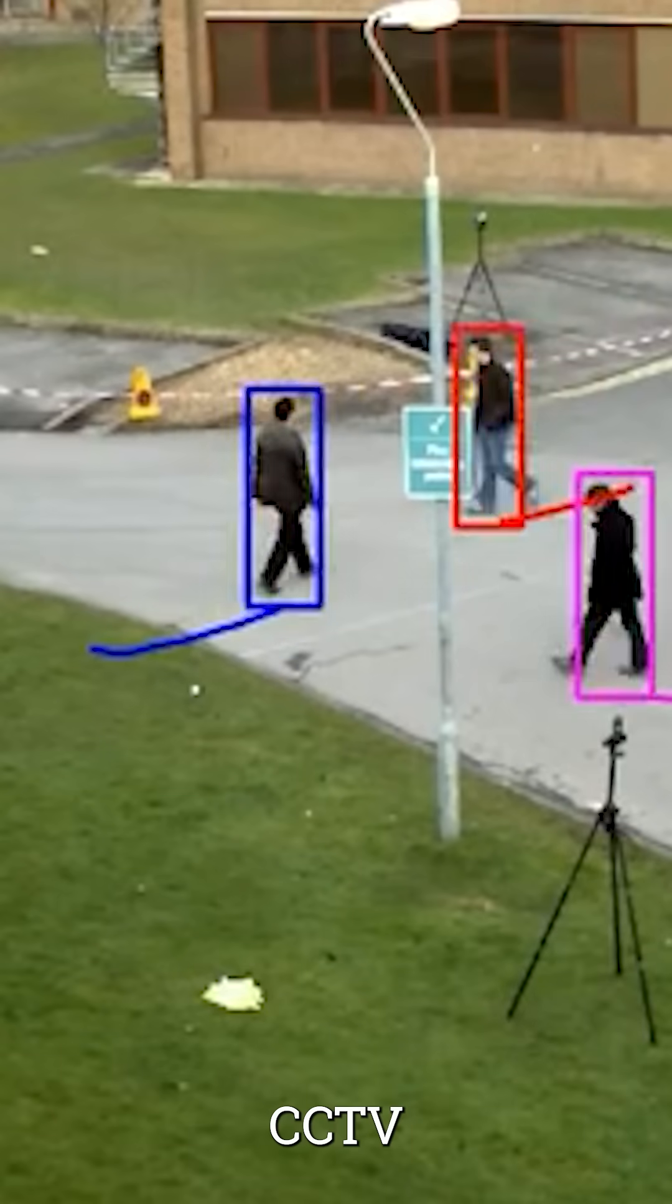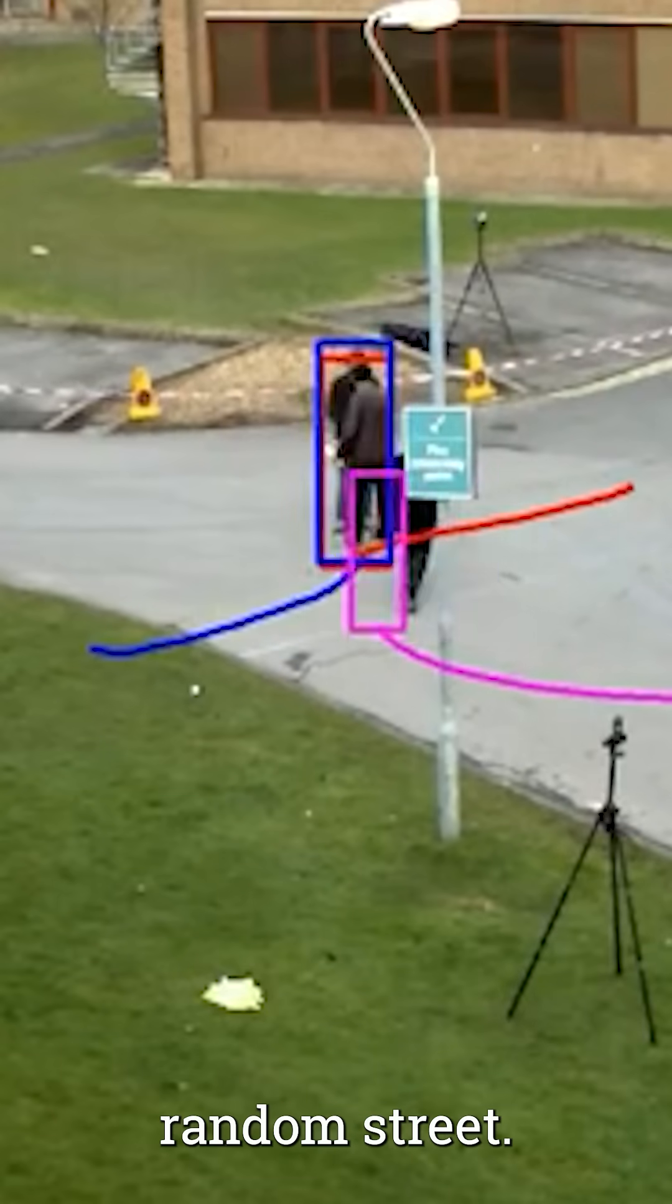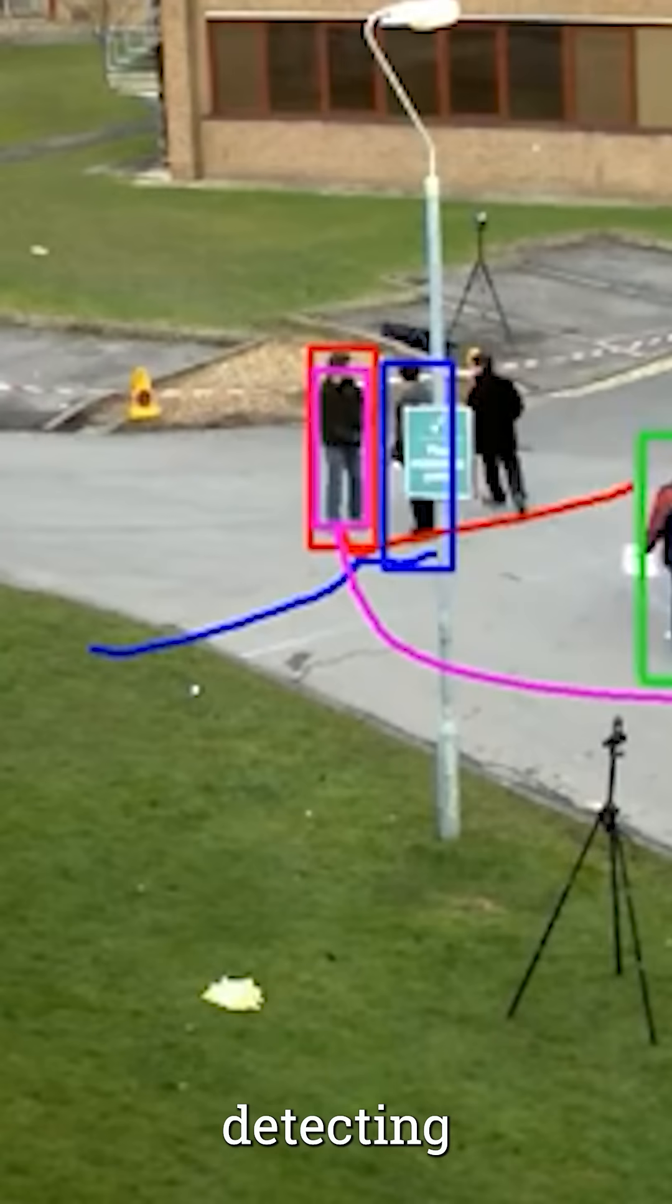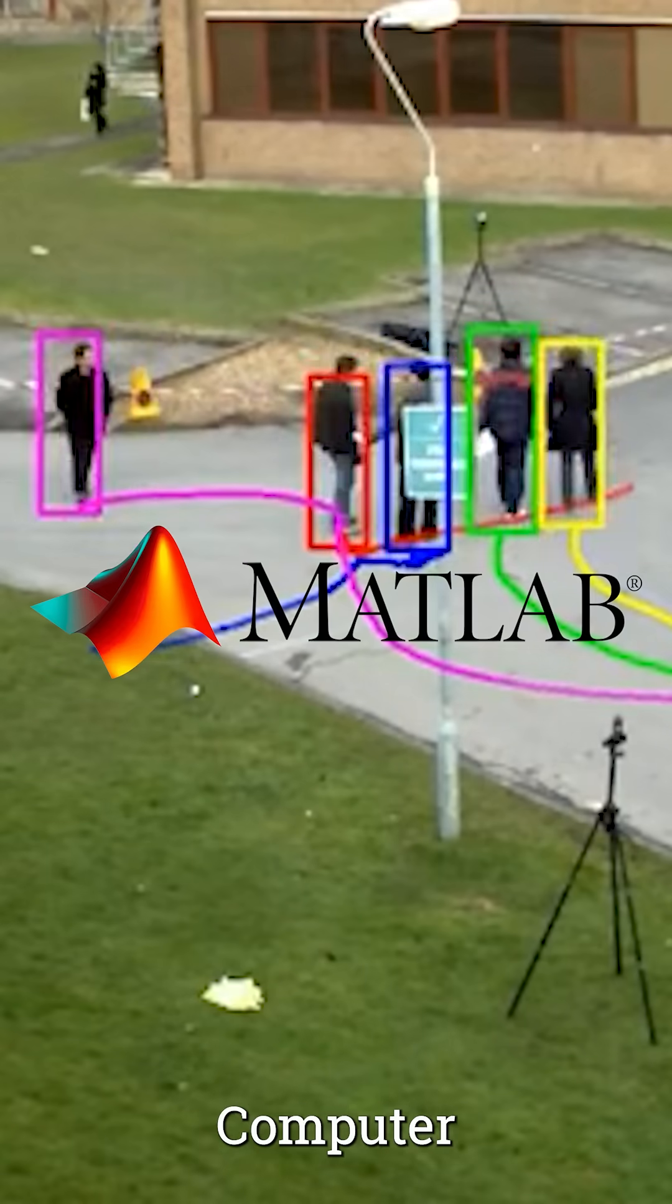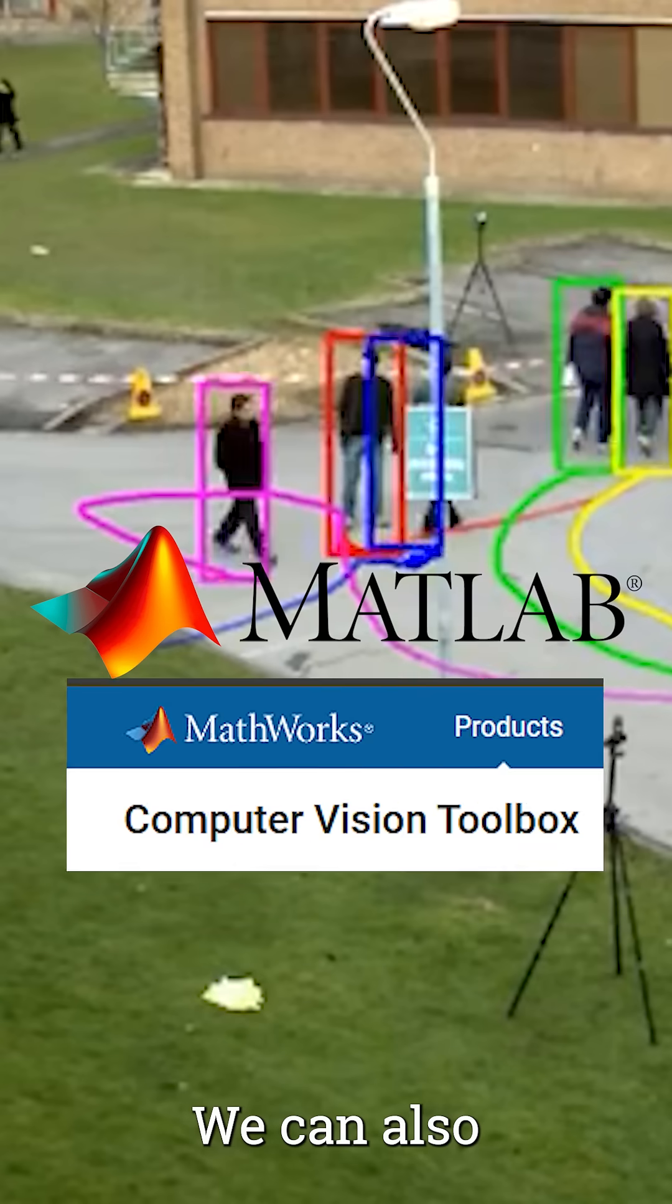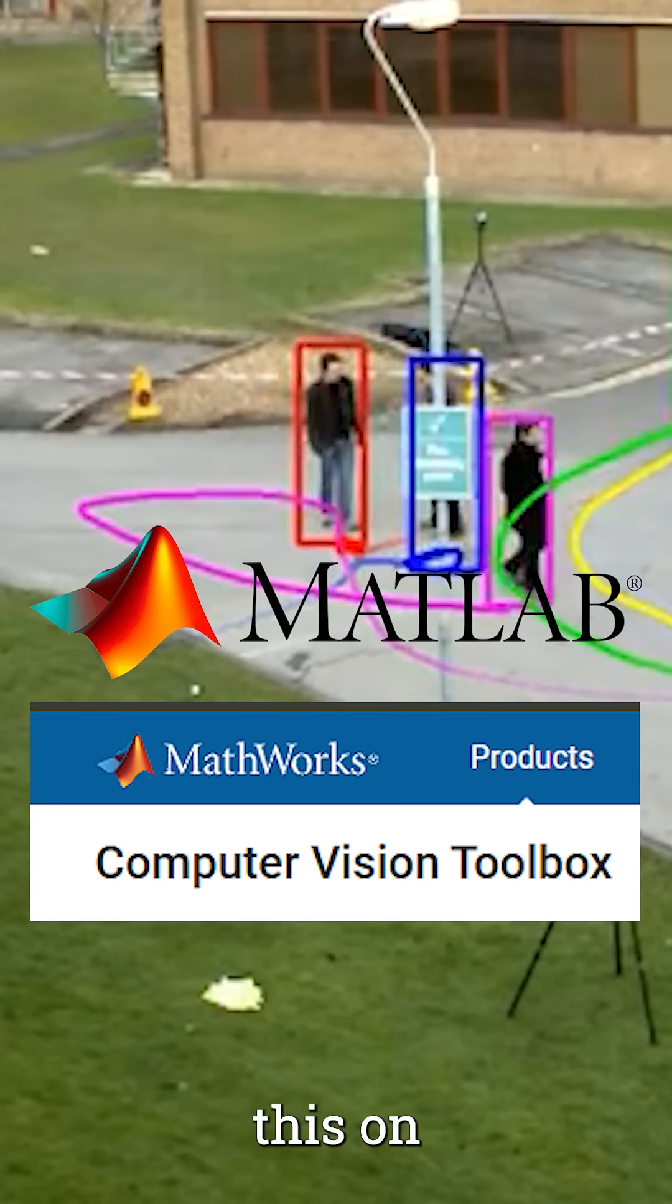We have here CCTV footage of a random street, but not only that, we are also detecting the humans in it. With MATLAB's Computer Vision Toolbox, we can replicate this on our own.